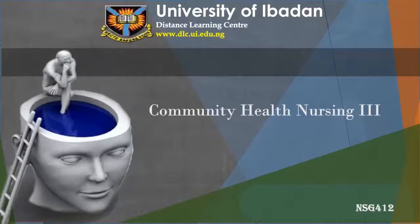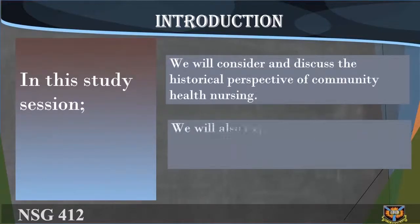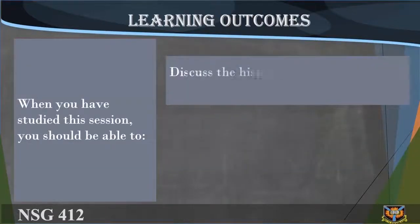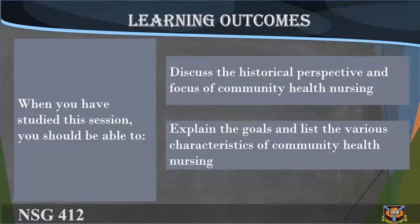Welcome to NSG 412 Community Health Nursing 3, Study Session 1: Introduction and Overview of the Course. In this study session we will consider and discuss the historical perspective of community health nursing, explain its goals, and list its characteristics. Learning outcomes: you should be able to discuss the historical perspective and focus of community health nursing, and explain the goals and list the various characteristics of community health nursing.